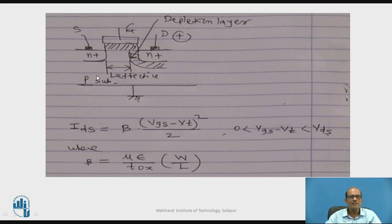IDS in the saturation region is given by beta times VGS minus VT bracket square by 2. For the saturation region, the condition is VGS minus VT greater than 0 and less than VDS.